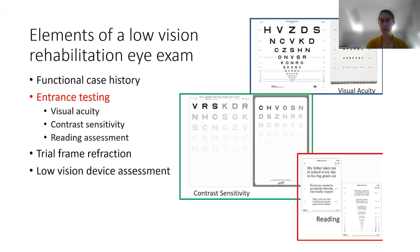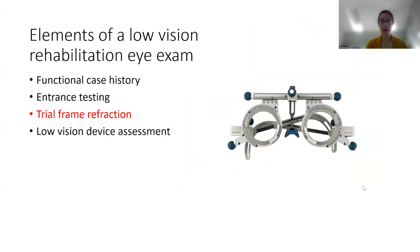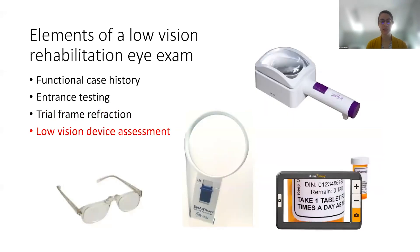We evaluate the patient's reading using a continuous text card, asking the patient to read sentences as quickly and accurately as they can for a real-world sense of reading function. After reading, we move on to trial frame refraction, ensuring the patient wears their best refractive correction, since uncorrected refractive error is a major cause of visual impairment globally. Finally, we assess low vision devices like hand and stand magnifiers, electronic devices, or strong prismatic readers to help patients accomplish important tasks.